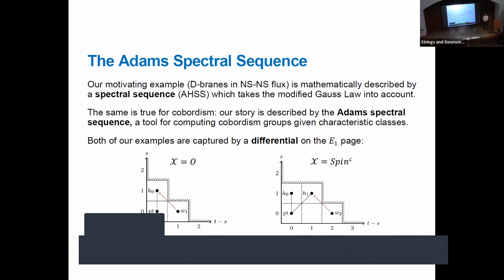In response to a question: spectral sequences in general describe the ways in which objects of one dimension can end on objects of another dimension — the sense in which objects of one dimension are charged under gauge fields of another dimension. The AHSS very specifically is the one that describes how a characteristic class can fail to appear in cobordism. Both examples I discussed are differentials on the E1 page originating in the first row. Whether other differentials also have this interpretation is an open question I'd love to think about.